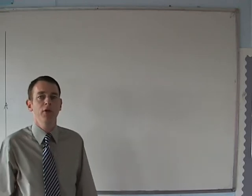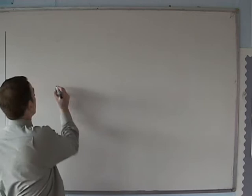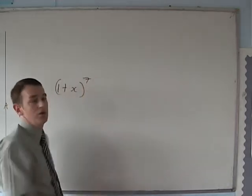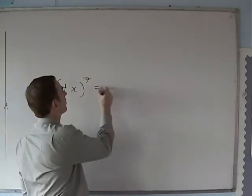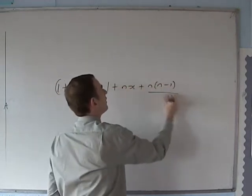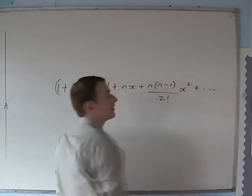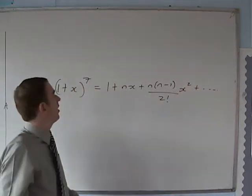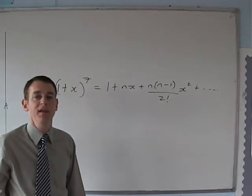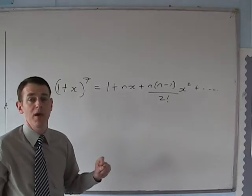In A2 you use the binomial theorem to expand positive brackets — things like (1+x)^7 — using the formula: 1 plus nx plus n(n-1)/2! times x squared, and so on. But we only use that for positive integer powers. What happens if we need to use negative powers or fractional powers?